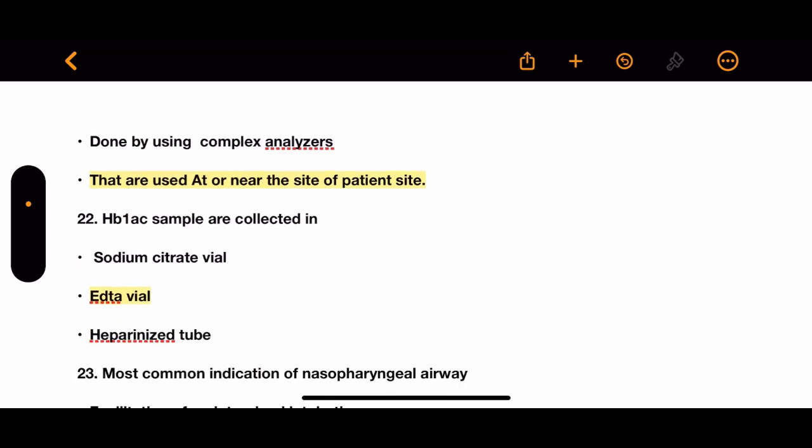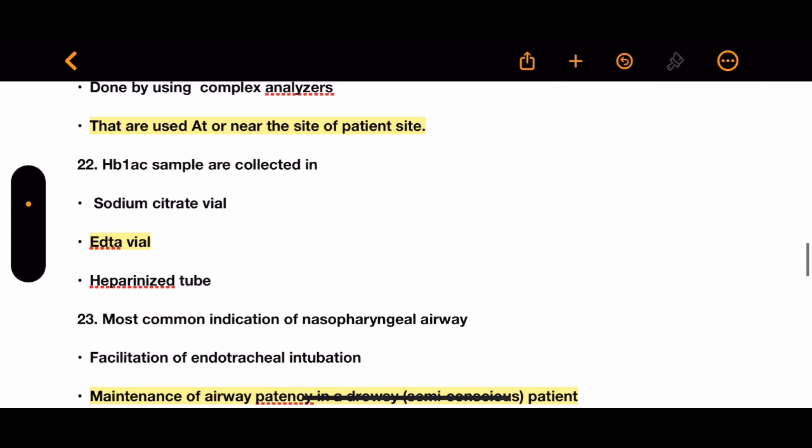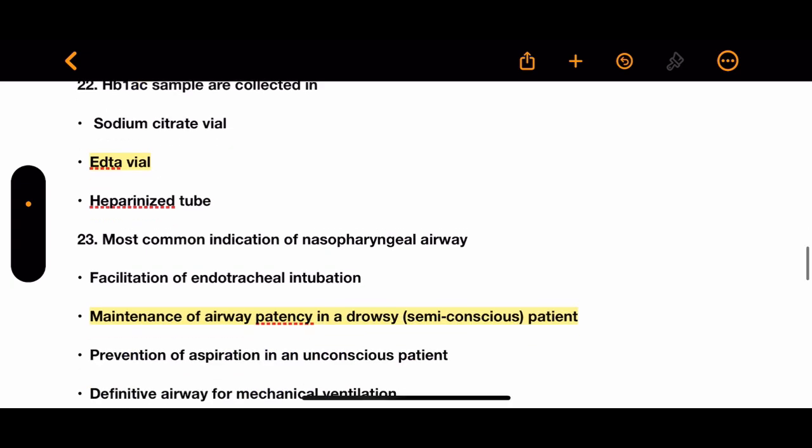Question 22: HbA1c samples are collected in which tube? Options: sodium fluoride vial, EDTA vial, or heparinized tube. The correct answer is EDTA vial.